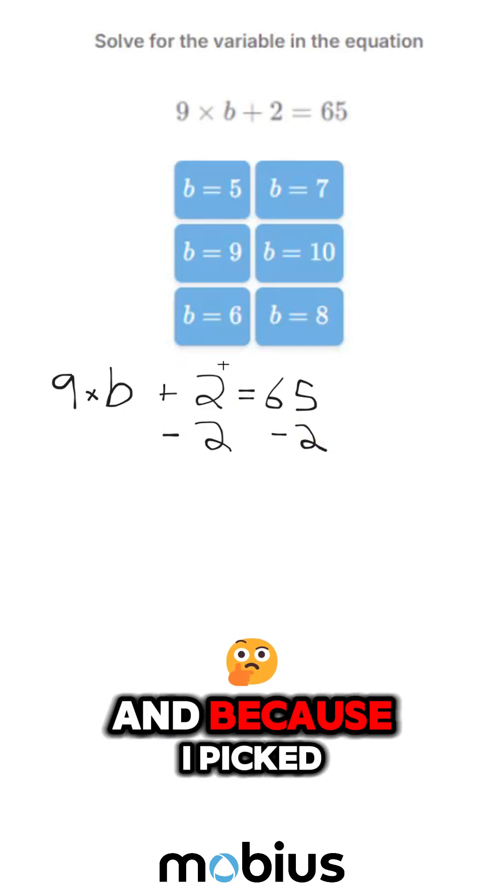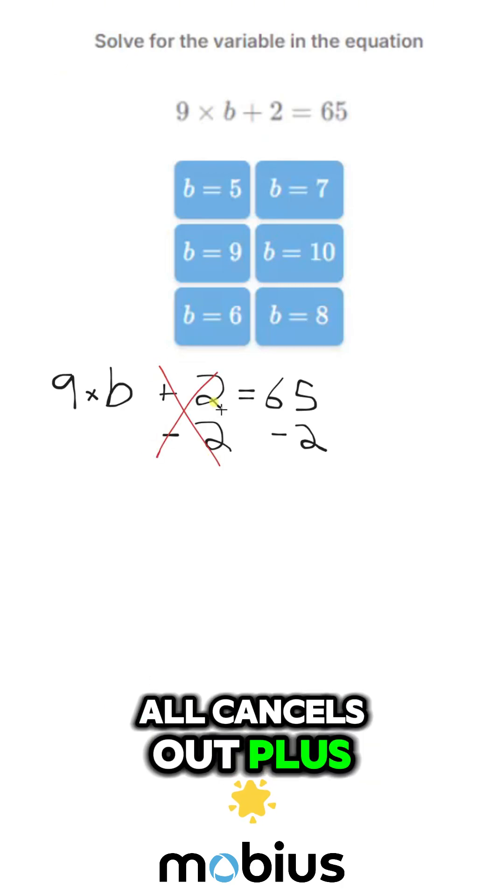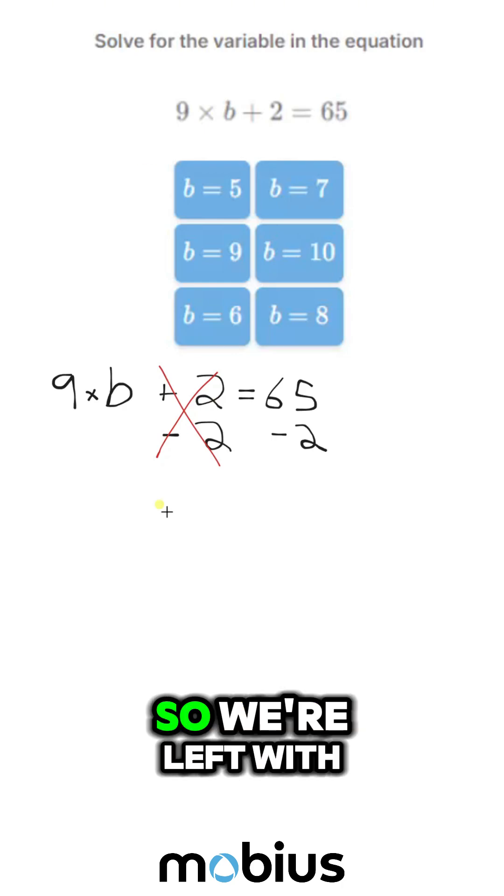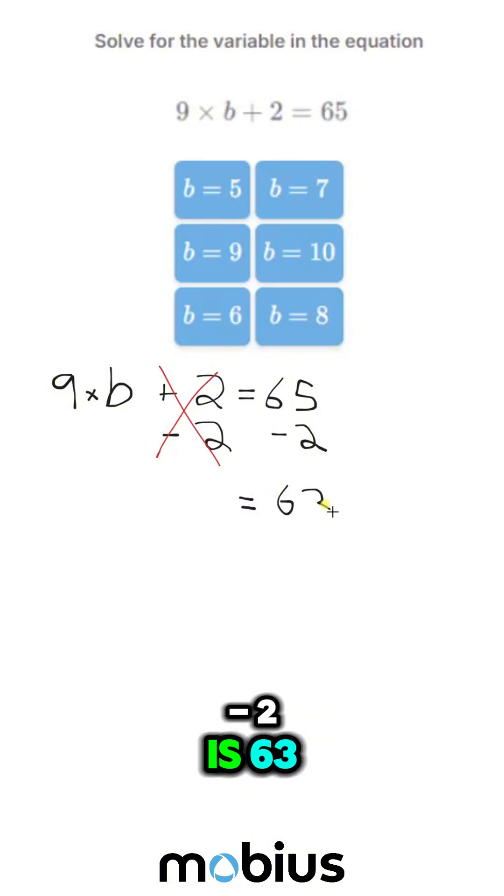And because I picked this carefully, on this side, that all cancels out, plus 2 and minus 2. So we're left with, on this side, 65 minus 2 is 63.